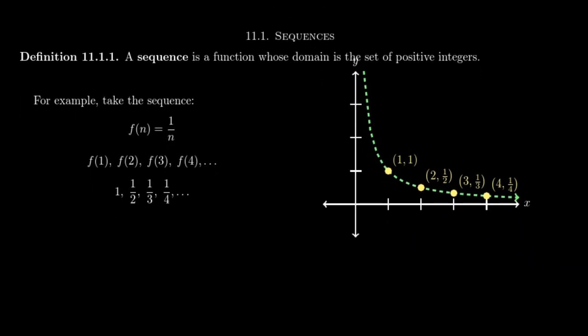So in section 11.1, we're going to introduce the notion of a sequence where a sequence is a type of function. A sequence is a function whose domain is taken over only positive integers. Sometimes that's fudged and we allow the number zero to be inside the domain, but we'll just take a domain of positive integers right now.